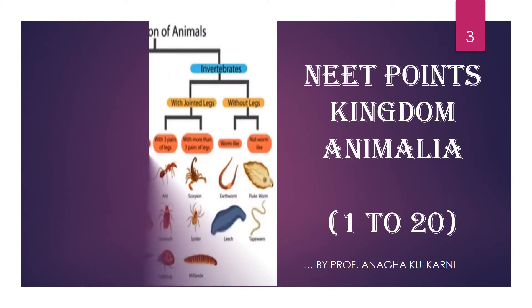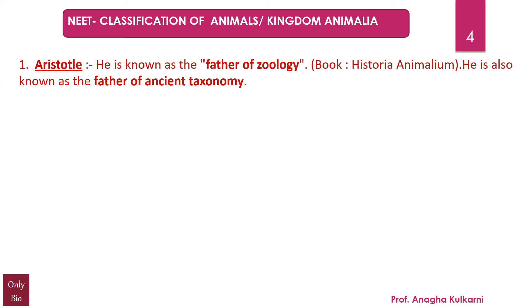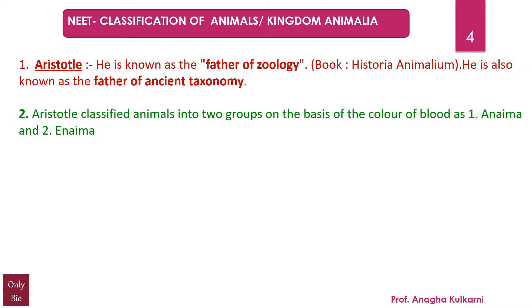So let's begin with the most awaited important points from Kingdom Animalia, from 1 to 20. Point number 1: Aristotle. He is known as the father of zoology. He had written a book called Historia Animalium. He is also known as the father of ancient taxonomy. Aristotle classified the animals into two groups on the basis of the color of the blood: Anaima and Enaima.